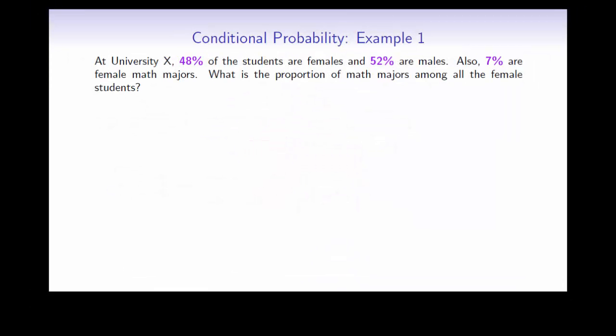Here's our first example. Suppose that at some university, 48% of the students are females and 52% are males. Also, 7% are female math majors. What is the proportion of math majors among the female students?